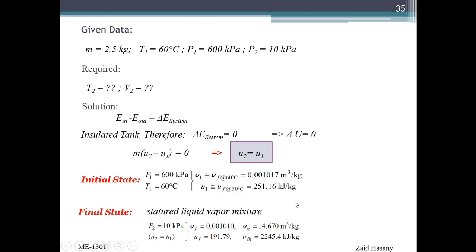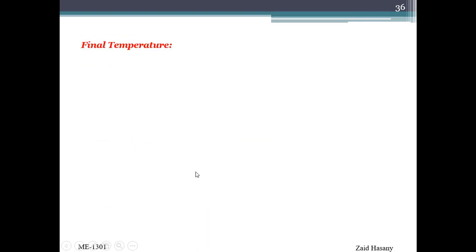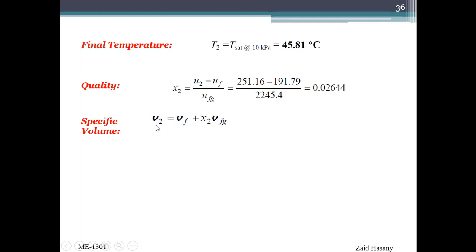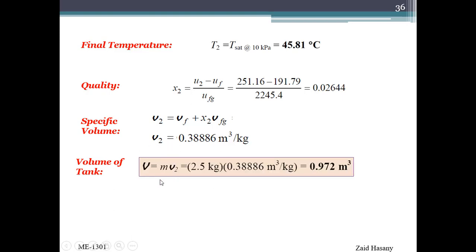Since the pressure dropped, we assume boiling will start. But we don't know the final temperature initially, so we calculated using U1 equals U2. At 10 kPa, we used uf and ufg to find the quality. We need the quality to find the final volume. The final specific volume is 0.38886 m³/kg. Using this, we calculated the total volume of the tank as 2.5 kg times v2 equals 0.972 m³. The mass M will not change and capital V will not change, only v2 and v1 change.